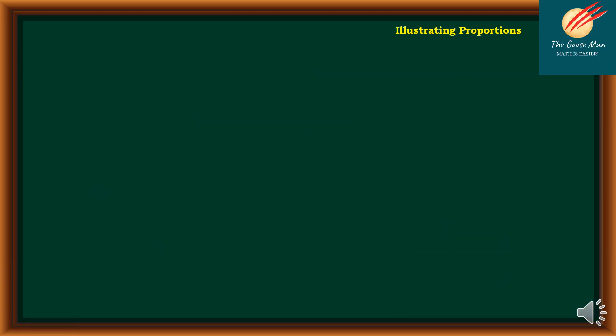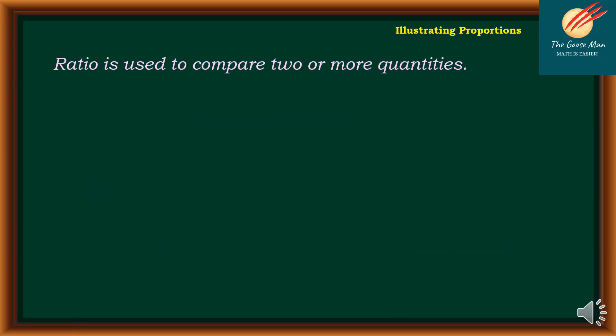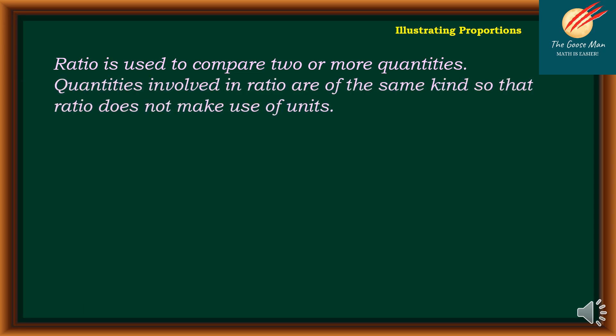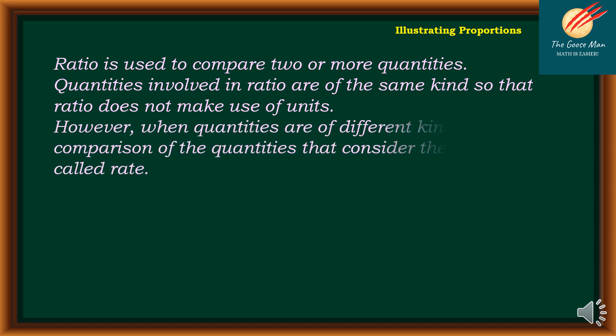Let's recall first the meaning of ratio. Ratio is used to compare two or more quantities, and quantities involved in ratio are of the same kind, so that ratio does not make use of units. However, when quantities are of different kinds, the comparison of quantities that considers the units is called rate.